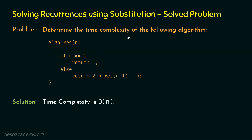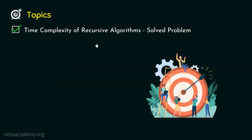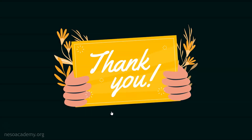We have solved this problem successfully. We followed a simple step-by-step process: first, we wrote the recurrence relation of time of this algorithm; then we solved that recurrence relation using the substitution method; and eventually, we obtained the time complexity of this algorithm, which is O(n). Thank you for watching this presentation. I will see you in the next one.